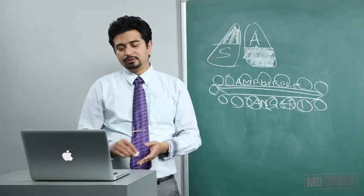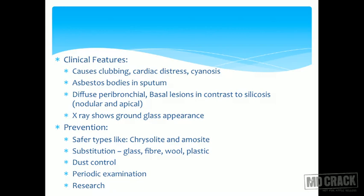Prevention of asbestosis includes substitution — using safer materials in place of asbestos. Substitutes such as glass fiber, plastics, and other materials are now replacing asbestos. Continued research for further substitution and improvement of working conditions is important. That was asbestosis — a very important disease.